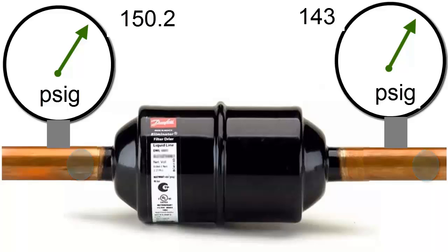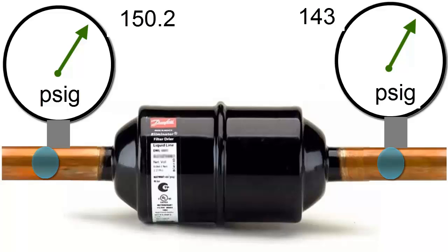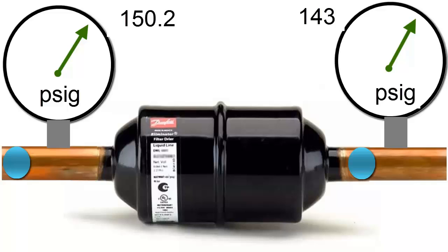Let's start by emphasizing that when a freezing, refrigeration, or air conditioning system has a clogged dryer filter, there is a noticeable drop in pressure in the refrigerant flow passing through that filter.